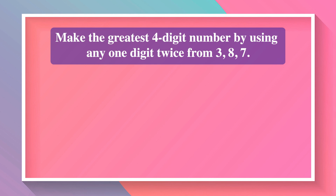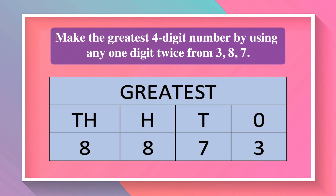Make the greatest 4-digit number by using any one digit twice from the digits 3, 8, 7. Only 3 digits are given and we have to make a 4-digit number. To make the greatest number, we repeat the greatest digit, which is 8. The greatest number is 8,873.